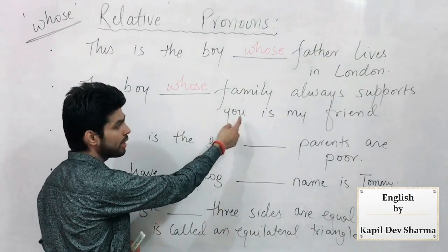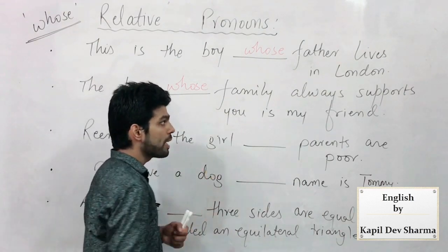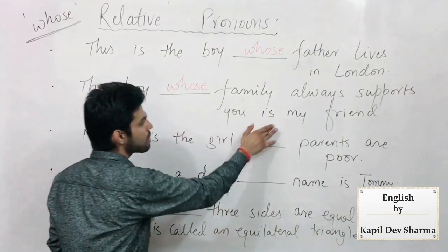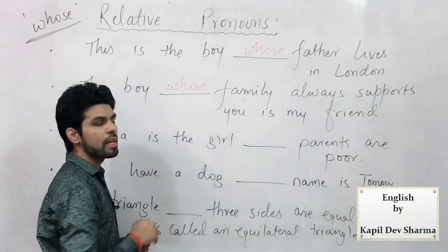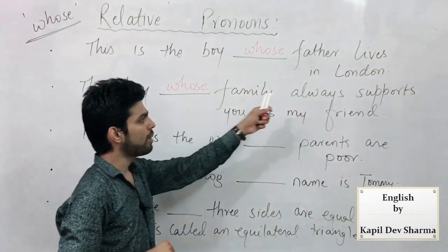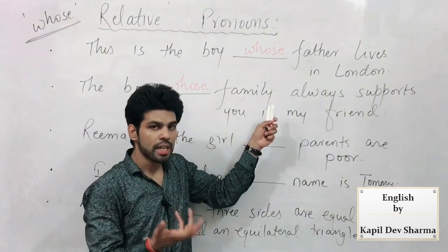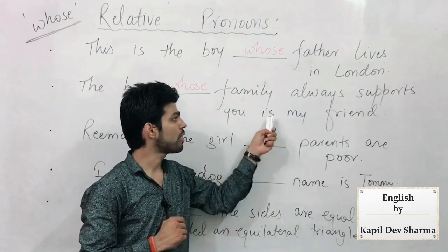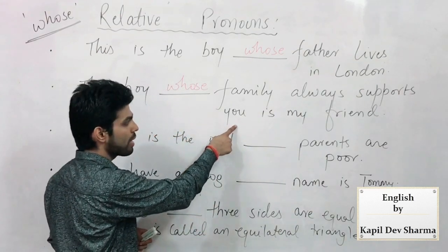Two clauses are always formed. The first clause is: 'The boy is my friend.' This 'is' is not for 'you' — 'you' is someone's object. What is written before 'you'? 'Supports' — and 'supports' is a verb; before it should be a subject. 'Family always supports' — put verb there. So: 'The boy is my friend' — which boy? — 'whose family always supports you.' So 'whose family' is subject, 'supports you' — family supports you. You are not the subject here; 'is' is for boy, and 'supports' — after that verb, you are the object.